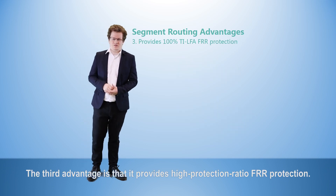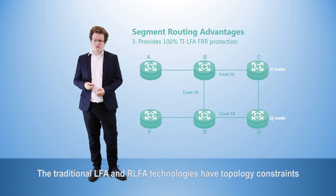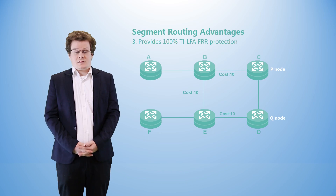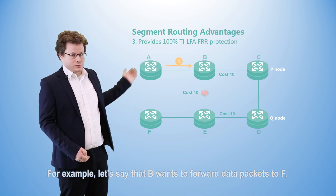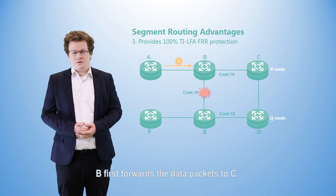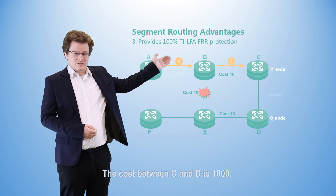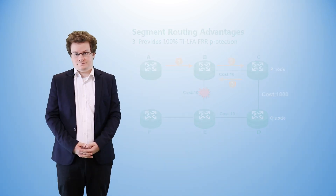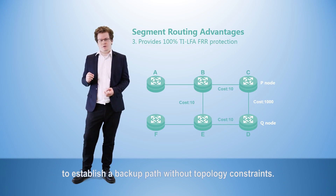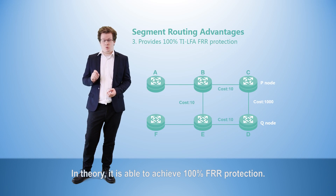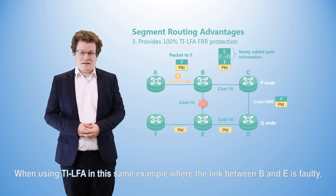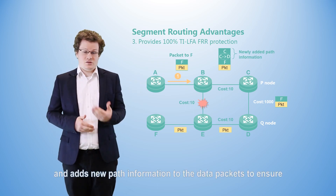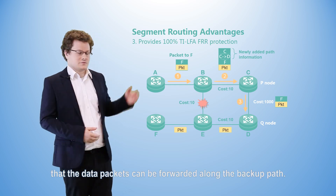The third advantage is that it provides high protection ratio FRR protection. The traditional LFA and RLFA technologies have topology constraints that mean they are unable to implement 100% full protection. For example, if B wants to forward data packets to F but there has been a link failure between B and E, B first forwards the data packets to C. The link cost between C and D is 1000, so C then forwards the data packets back to B, which forms a loop causing a forwarding failure. The TI-LFA technology uses an explicit path to establish a backup path without topology constraints, and in theory is able to achieve 100% FRR protection. When using TI-LFA in this same example, B directly enables the TI-LFA FRR backup entry and adds new path information to the data packets to ensure they can be forwarded along the backup path.